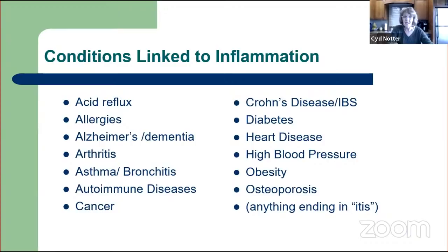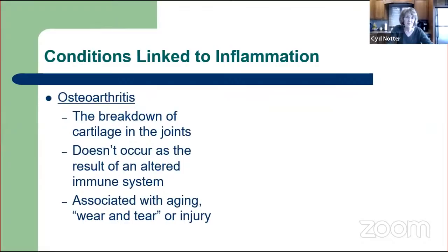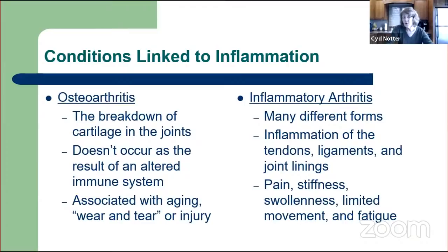We could spend hours talking about inflammation's role in all of these, but arthritis is the thing people most easily associate with inflammation. The two main types are osteoarthritis—the breakdown of cartilage in the joints, associated with wear and tear or a traumatic injury—and inflammatory arthritis, including psoriatic arthritis, gout, and rheumatoid arthritis, which is the most common form. Inflammation of the tendons, ligaments, and joint linings contributes to RA, resulting in pain, stiffness, swollenness, limited movement, and fatigue.